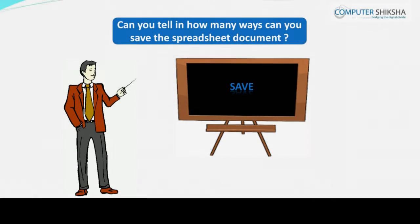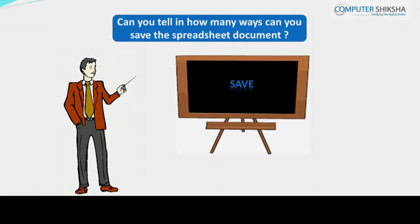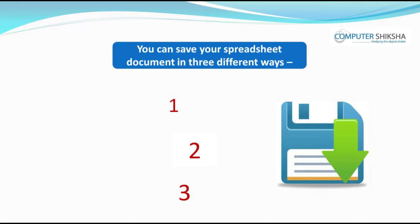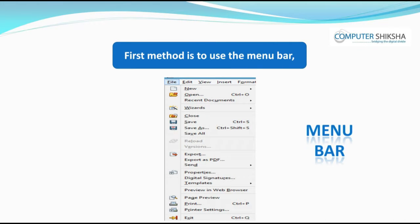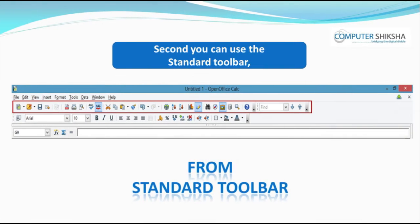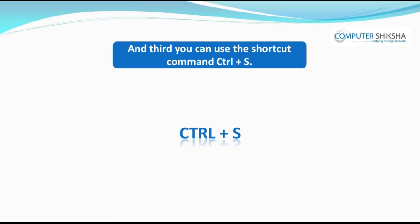Can you tell in how many ways you can save the spreadsheet document? You can save your spreadsheet document in three different ways. First, use the menu bar. Second, you can use the standard toolbar. And third, you can use the shortcut command Control+S.